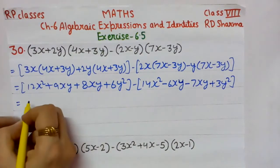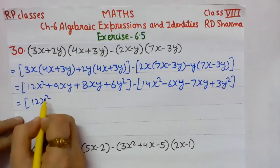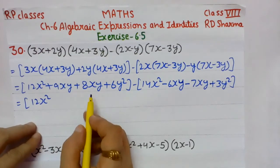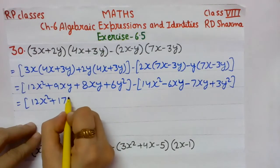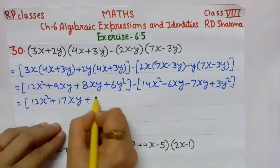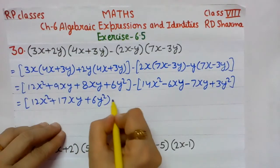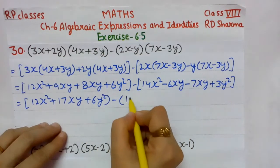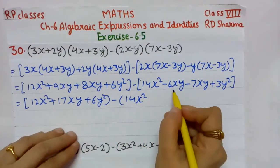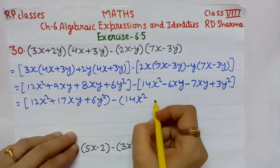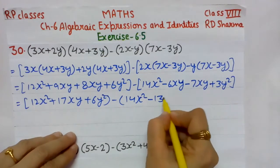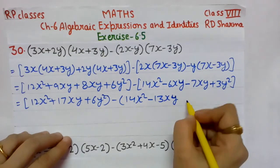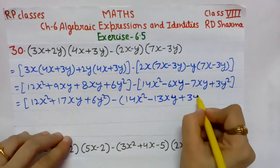Now students, we solve the like terms inside the brackets. In the first bracket: 12x² remains as is. Plus 9xy + 8xy are like terms, it becomes 17xy. Plus 6y² as it is. In the second bracket: 14x² as it is. Minus 6xy and minus 7xy — minus minus becomes add, so it becomes minus 13xy. Plus 3y² as it is.